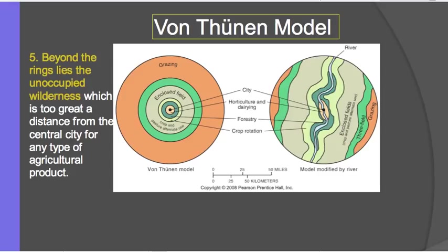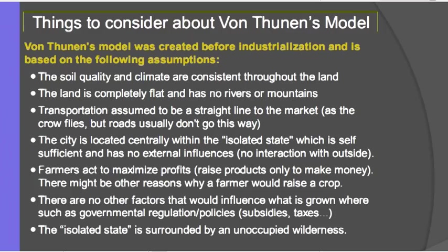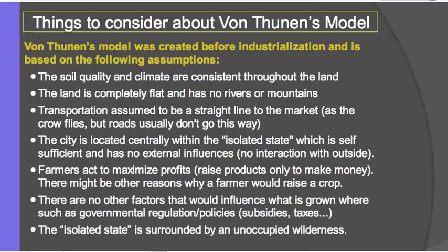The wilderness is too far from the city to have any kind of agricultural product being raised, and it's outside of this isolated community that has one center market. Everything is based on the closeness of that market and the value of the land. Now, with all models, they have to make some kind of assumption.